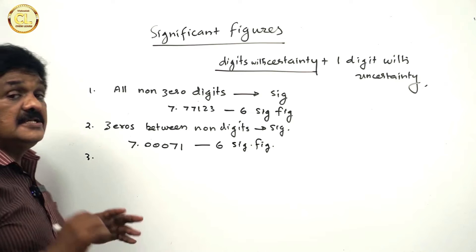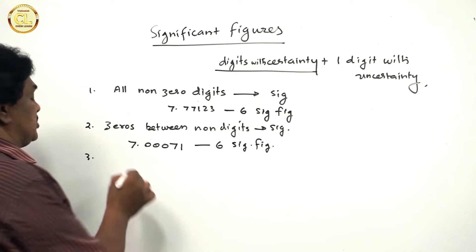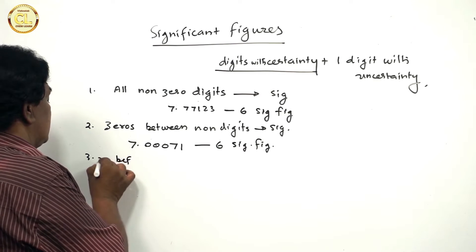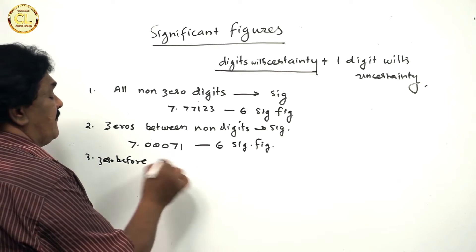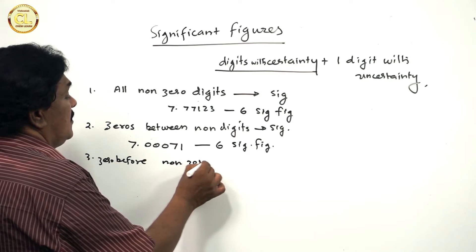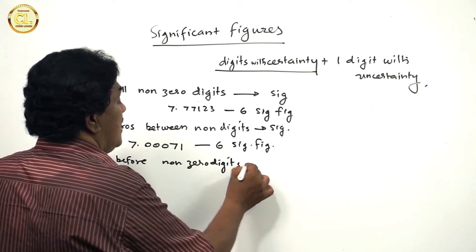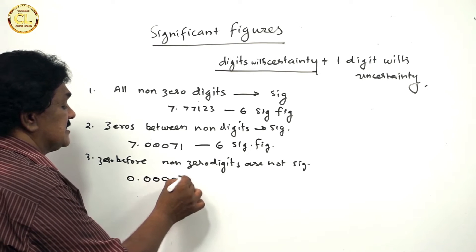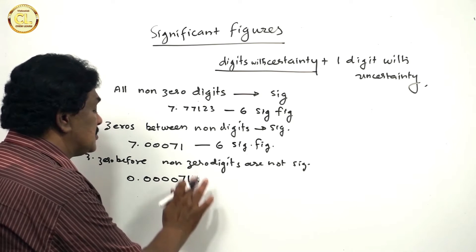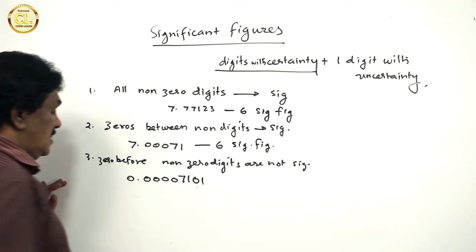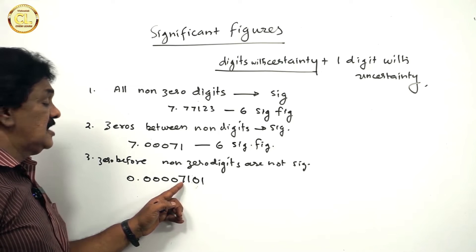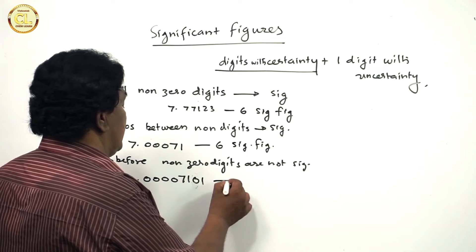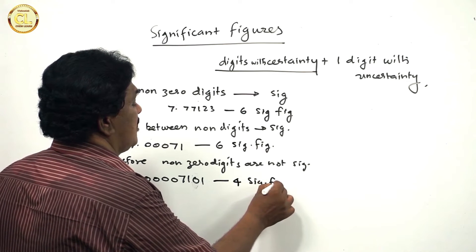Third: zeros coming before non-zero digits are not significant. For example, 0.00000713 or 0.000407101. All these zeros are coming before this non-zero digit, so they are not significant. Only digits 1, 2, 3, and this zero — which is coming between non-zero digits — are significant. So there are 4 significant figures.